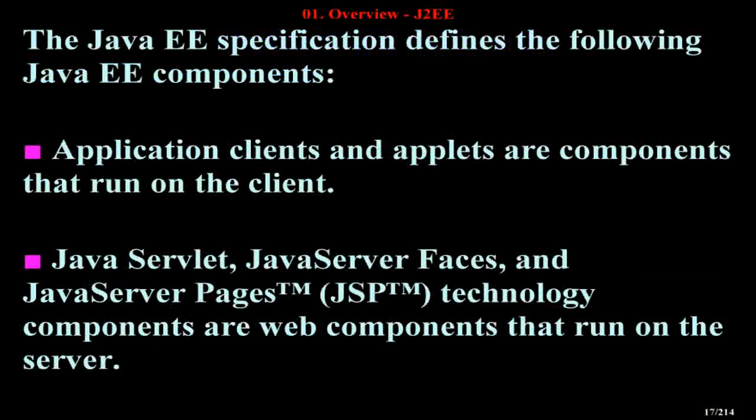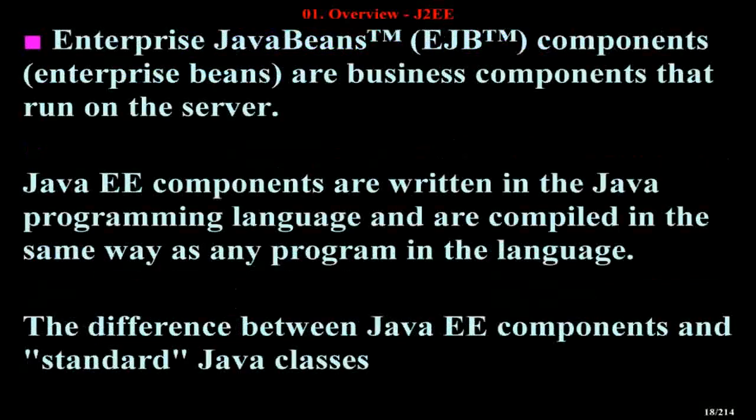Application clients and applets are components that run on the client. Java Servlet, JavaServer Faces, and JavaServer Pages (JSP) technology components are web components that run on the server. Enterprise JavaBeans (EJB) components, or enterprise beans, are business components that run on the server. Java EE components are written in the Java programming language and compiled in the same way as any program in the language.